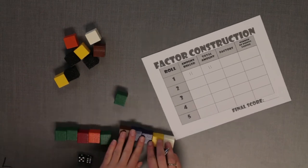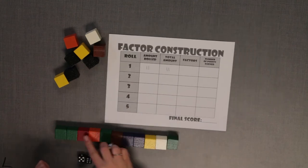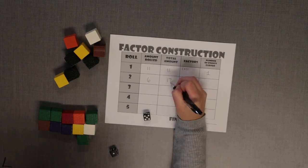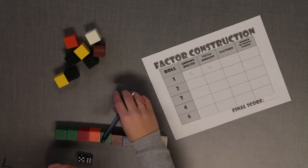You earn one point for the first round. On your next turn, you will add the amount rolled to the sum of the previous amounts rolled in order to find the new total amount. Using the new total, you will find the factor pairs. Each player takes five turns.